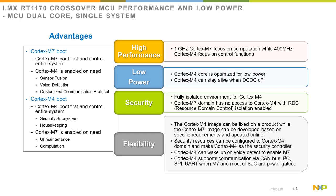In terms of low power, the Cortex-M4 core is optimized specifically for lower power and can stay alive when DC-DC is off. Additionally, the Cortex-M4 contains a fully isolated environment and additional resource domain control isolation between the two cores, providing a means of authenticating and partitioning resources between the two cores.